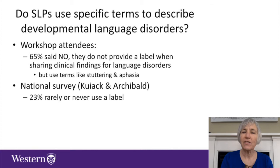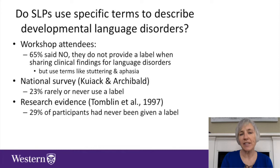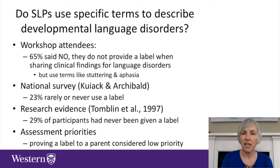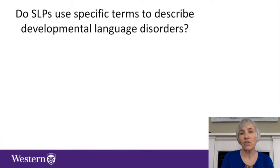But of interest, they would use specific terms like stuttering and aphasia. We found similarly in a national survey conducted by my student Alyssa Kuyak and me, that 23% of speech and language pathologists respondents in Canada indicated that they would rarely or never use a label. And research as far back as 1997 had similar findings, where nearly 30% of participants had never been given a label for their communication disorder.